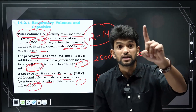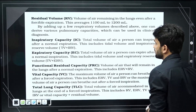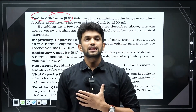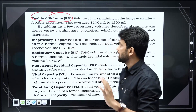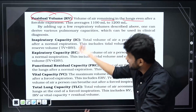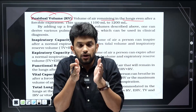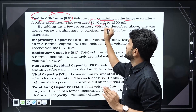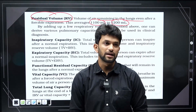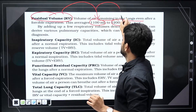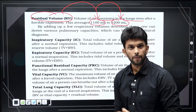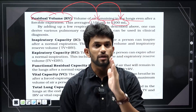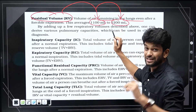Now, residual volume: the volume of air remaining in the lungs even after forceful expiration. So even after you breathe out as much as possible, there is still air left in the lungs — we call that residual volume. Residual volume is 1,100 to 1,200 ml.